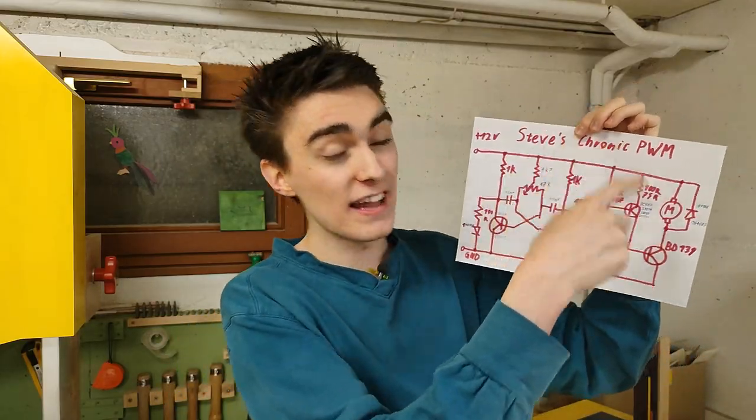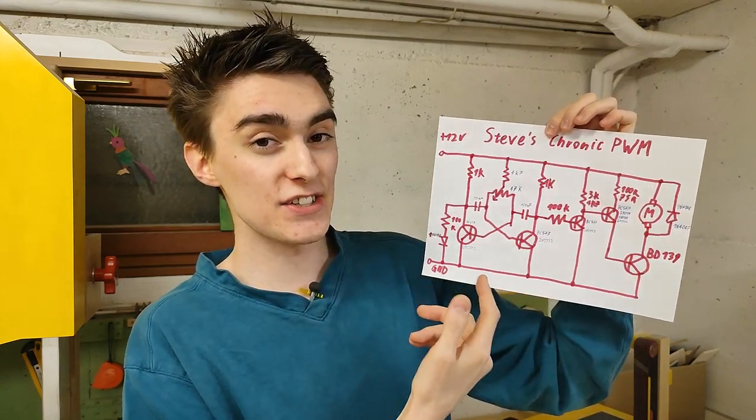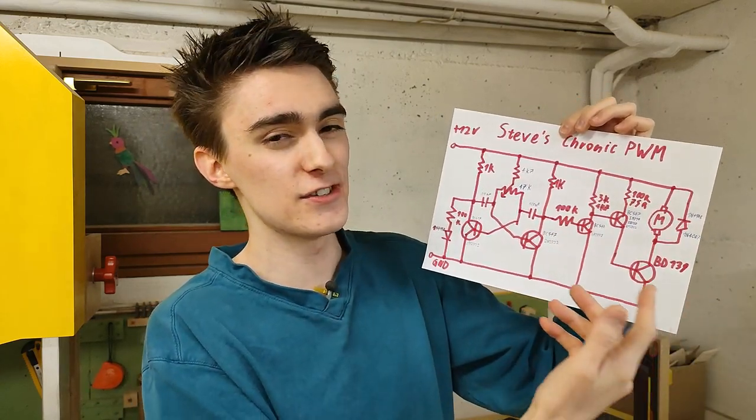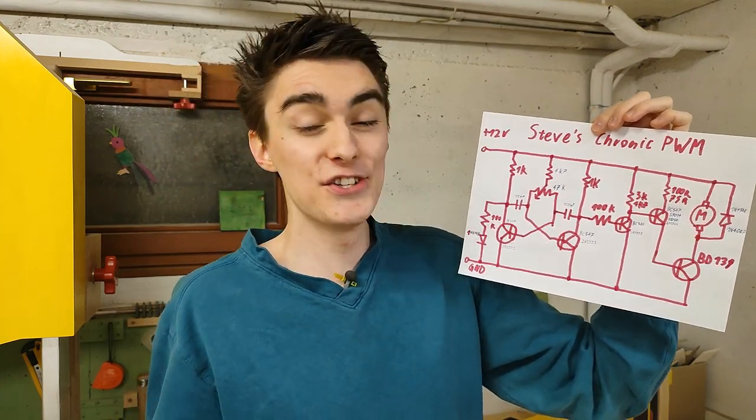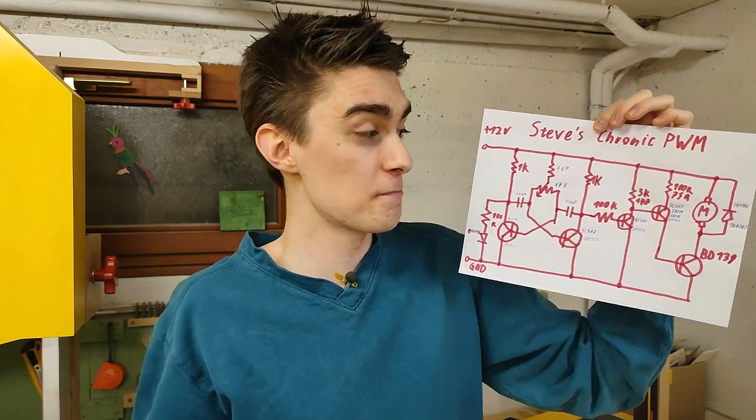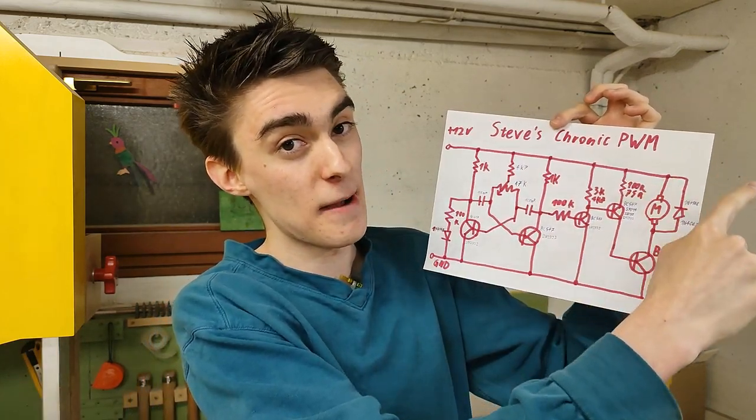Here we go, all the component values are inserted. In most cases you have quite a bit of leeway in terms of the exact resistor values you can use, and likewise the transistors are pretty unconstrained as well, so you can really play around with it a lot. But other than that, this is Steve's Chronic PWM.